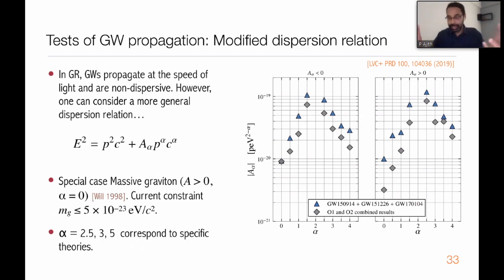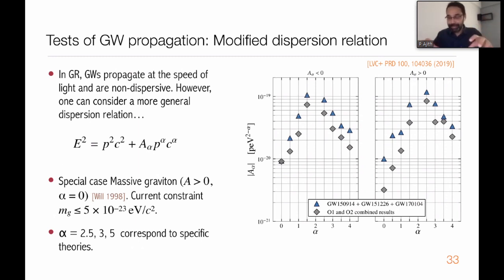This can be used to constrain the mass of the hypothetical particle graviton. The graviton is the proposed quantum particle of gravity. If such a particle exists, it has to be massless, just like the photon, because gravitational waves travel at the speed of light. If on the other hand the graviton were massive, this would produce a non-trivial dispersion relation and cause dispersion of the observed signal. This lack of dispersion can be used to constrain the mass of the graviton, and these gravitational wave observations have enabled us to put some of the best upper limits on the mass of the graviton.